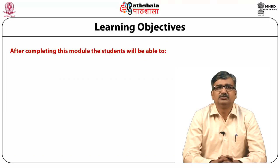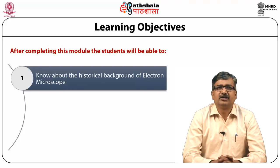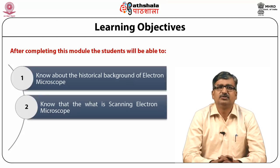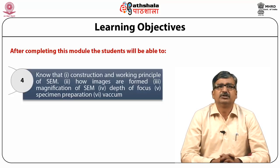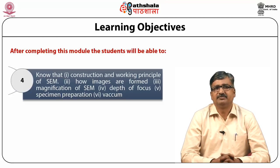After completing this module, the student will be able to learn about the historical background of electron microscope, what is the scanning electron microscope, basic processes showing how electrons interact with matter, the construction and working principle of SEM, how images are formed, how magnification is achieved, what is the depth of focus, specimen preparation, and the requirement of vacuum.